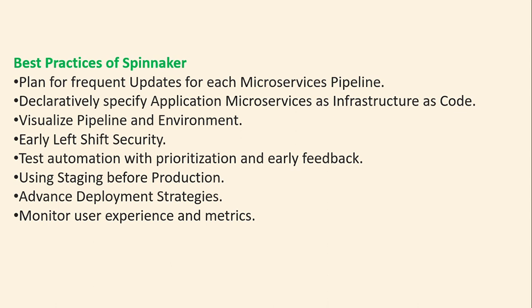The best practices for using Spinnaker include: plan for frequent updates for each microservice's pipeline; declaratively specify application microservices as infrastructure as code; visualize pipelines and environments; enable early left-shift security; implement test automation with prioritization and early feedback; use staging before production; apply advanced deployment strategies; and monitor user experience and metrics.